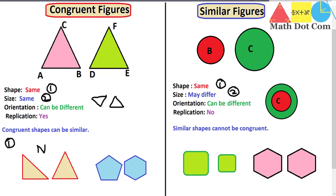Moving to the second pair, we have one hexagon and another shape — their shapes are different, so again these are neither similar nor congruent. For the third pair, we have two squares with rounded corners. The first condition — shape — is satisfied; both are the same shape. Checking the second condition, the sizes of the two shapes are different, so these are not congruent figures. Since their size may vary, these are similar figures.